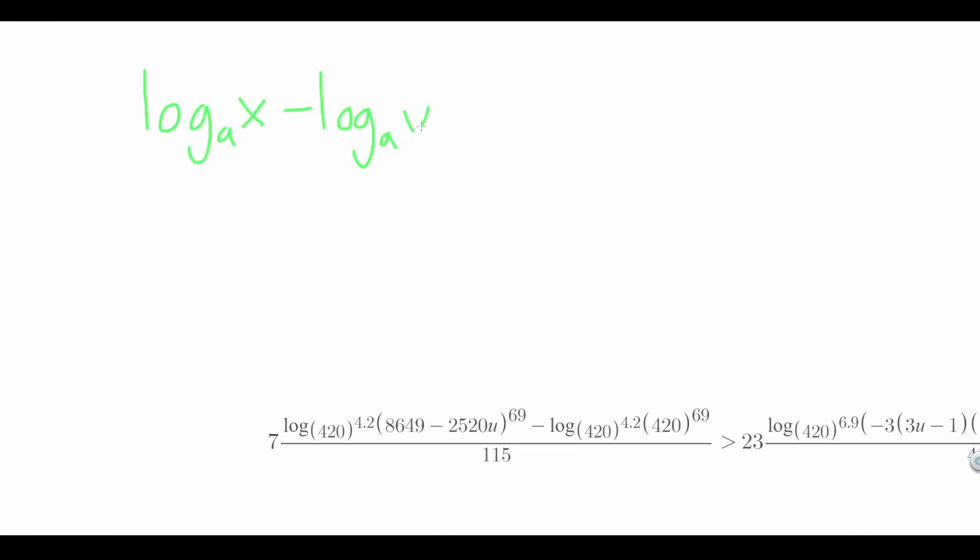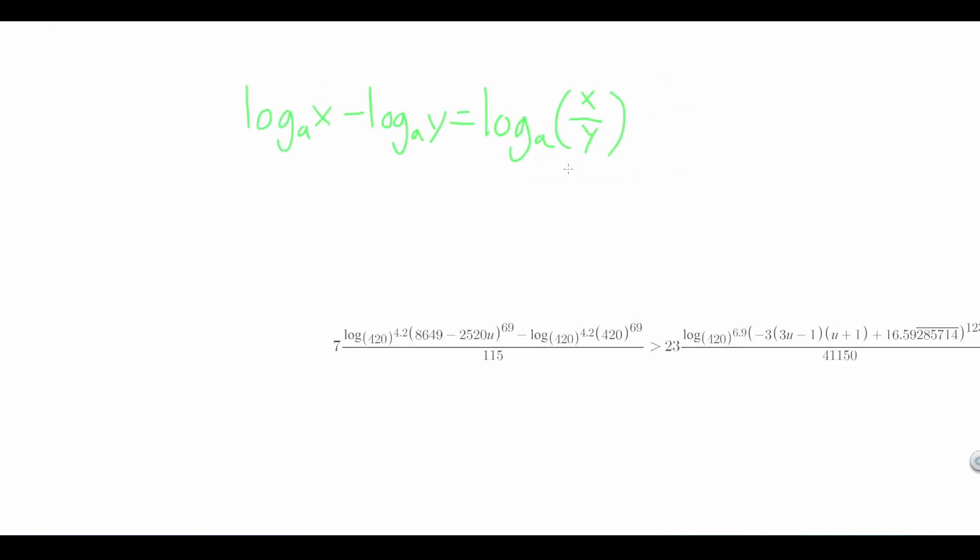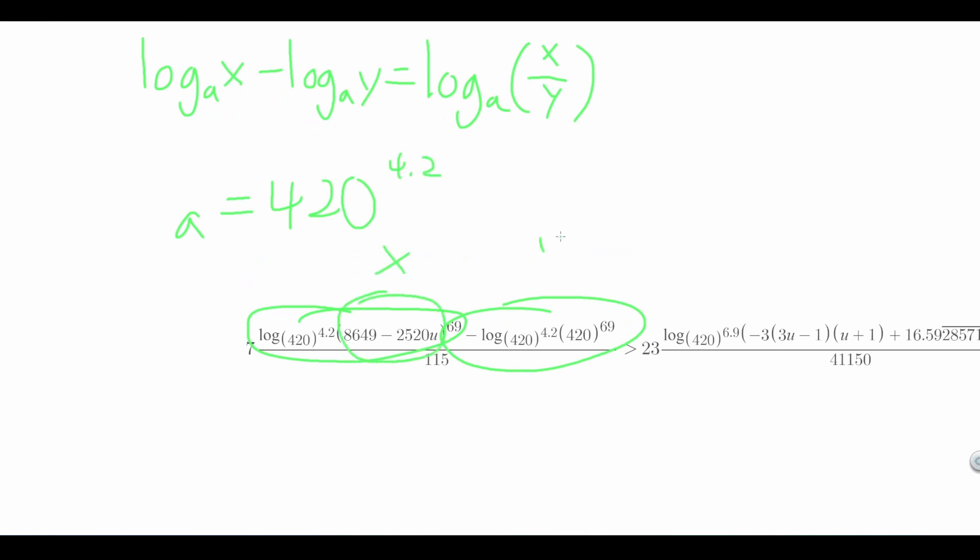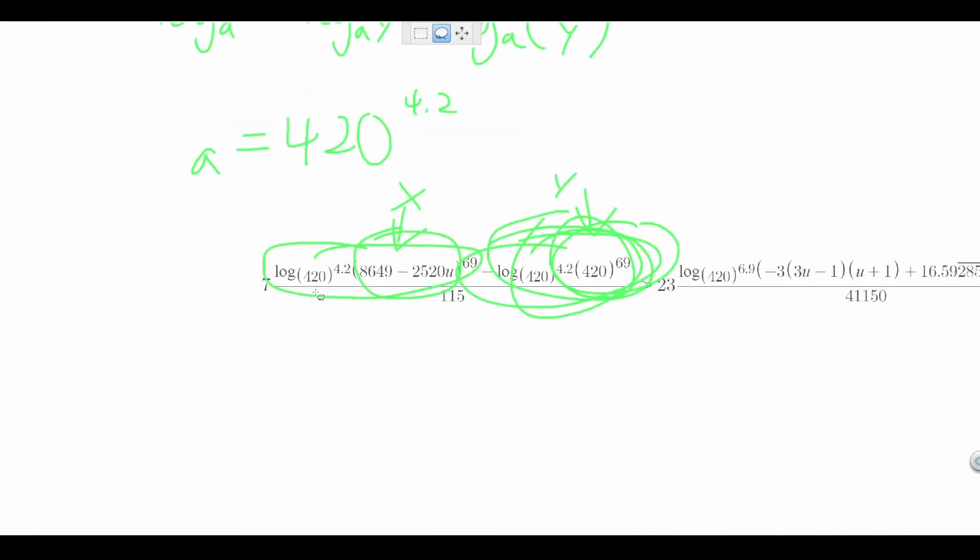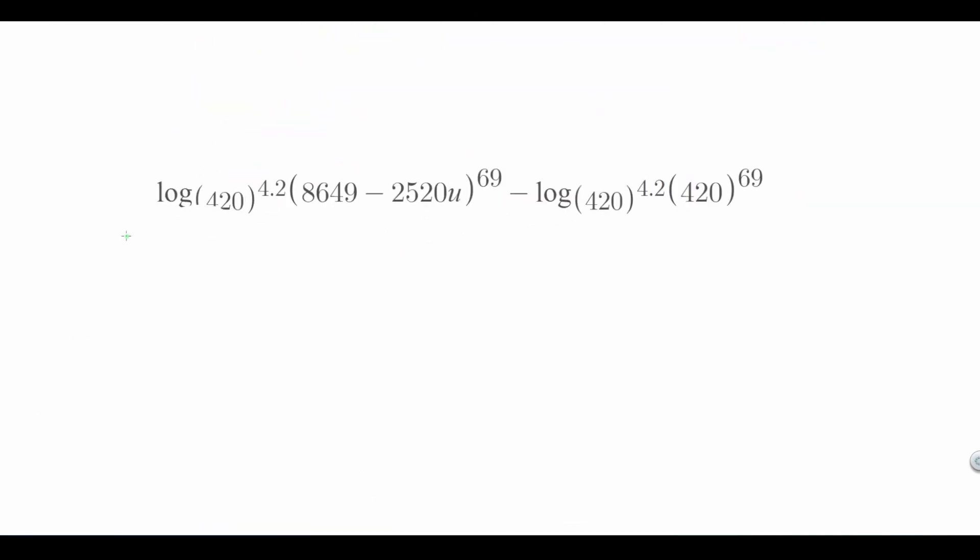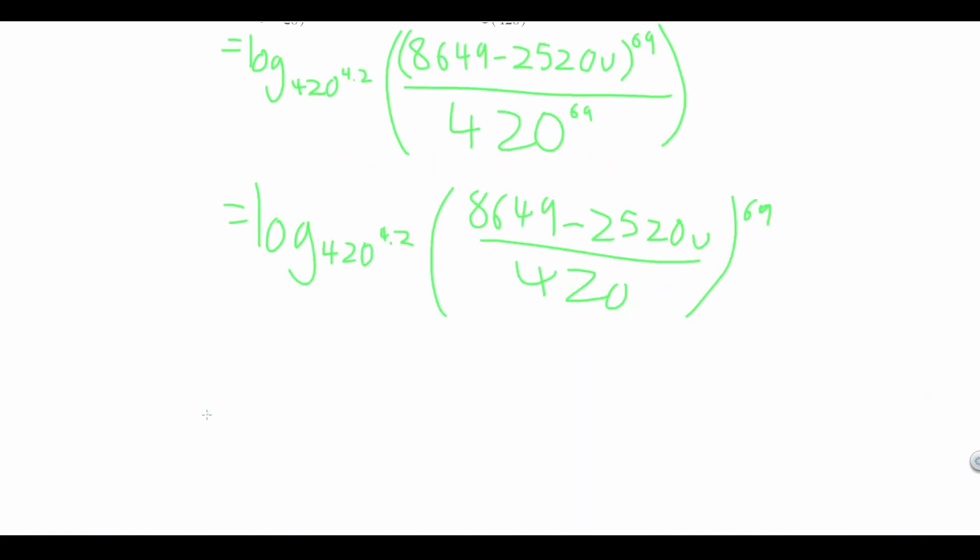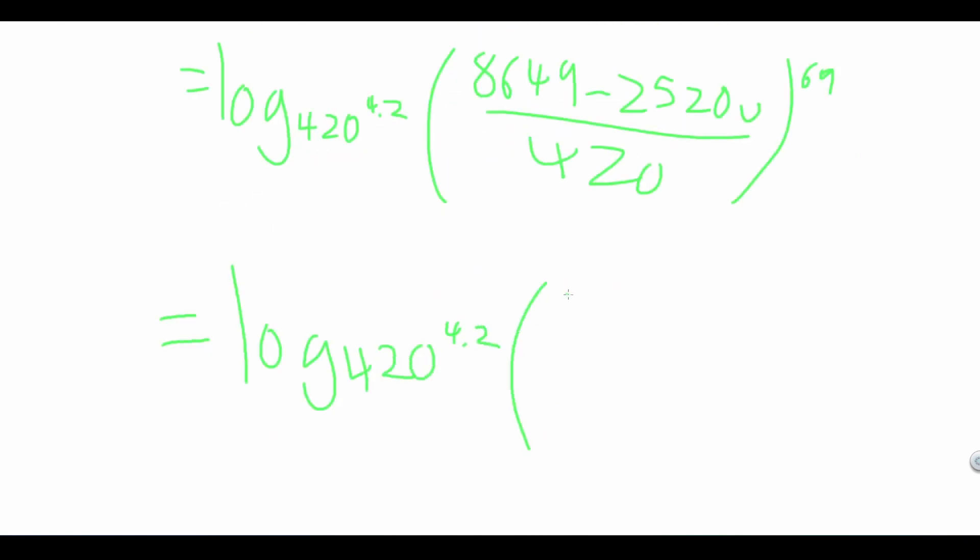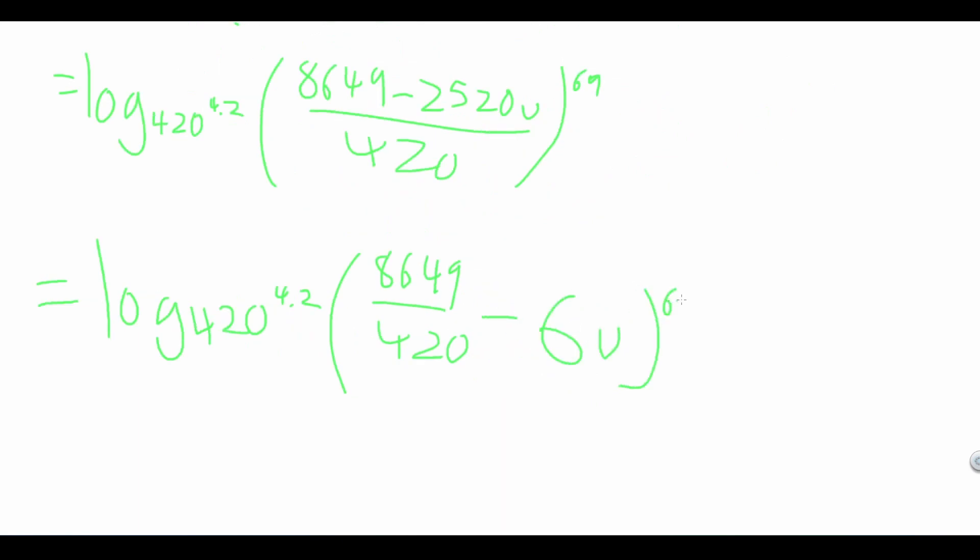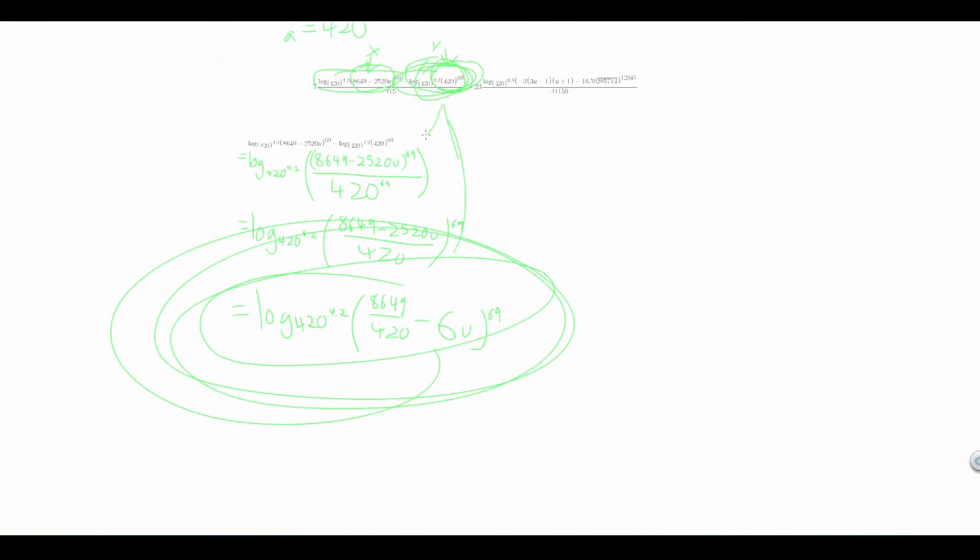Log x to the base a minus log y to the base a is equal to log x divided by y to the base a. Looking at our inequality, we can see that our a-value is 420 to the power of 4.2. This means that this entire thing can be simplified to log of (8,649 minus 2,520u) to the power of 69 over 420 to the power of 69. And then we can put the 69 around the fraction instead of writing it in the numerator and denominator. This simplifies to log of (8,649 over 420 minus 6u) to the power of 69.